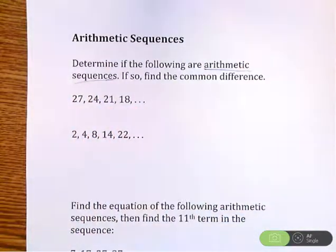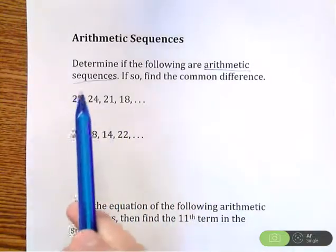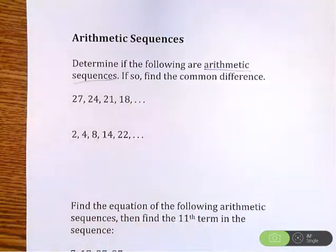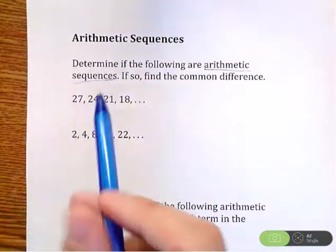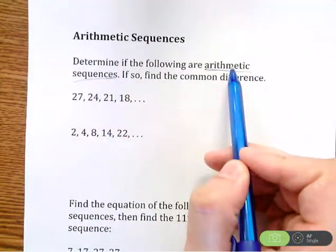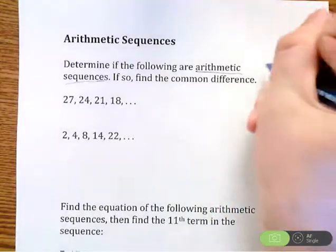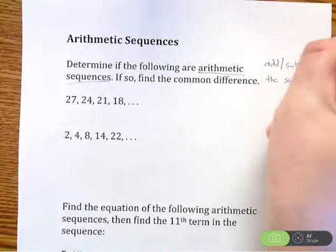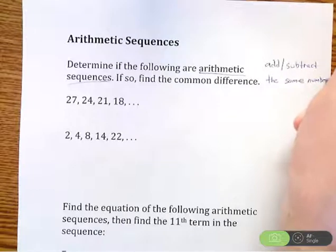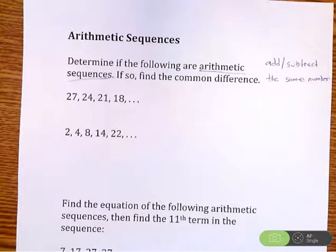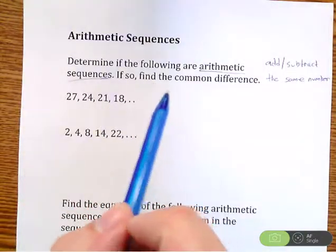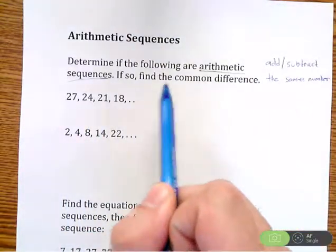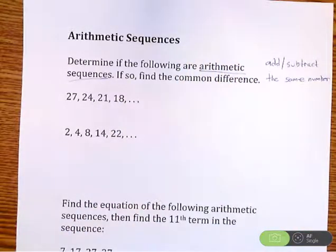A sequence is just a list of numbers, and they're going to have some sort of pattern — you might see plus 7, plus 8, plus 9, plus 10 in between each one. Sequences can have a wide range of patterns. What makes it an arithmetic sequence is that the pattern is adding or subtracting the same number over and over again. If the pattern is adding or subtracting the same number every single time, that is what we call a common difference, thus making it an arithmetic sequence.